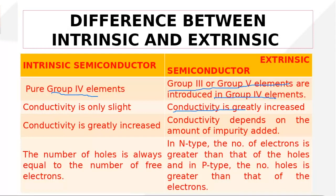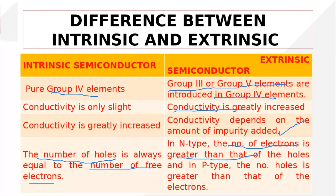When adding impurities, all properties of the semiconductor — including electrical and magnetic — are enhanced. Conductivity also depends on the amount of impurity: more impurities means larger conductivity, fewer impurities means less conductivity. So the conductivity of an extrinsic semiconductor depends on both the amount and the type of impurity. In intrinsic semiconductors, holes equal electrons; in n-type, electrons are greater than holes; and in p-type, holes are greater than electrons.